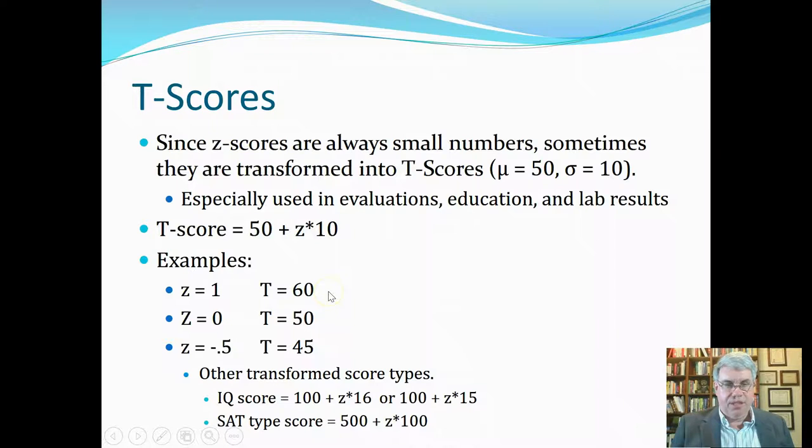For Z of 0, which is average, that would be 50 plus 0 times 10, that would give a T of 50. For a Z of minus 0.5, we would do 50 plus minus 0.5 times 10, and that would give us 45. So that's how we go from a Z-score to a T-score. And it's more of a convenient way, because we can use whole numbers rather than decimals to describe people's scores.